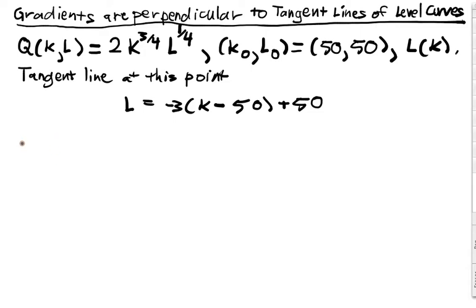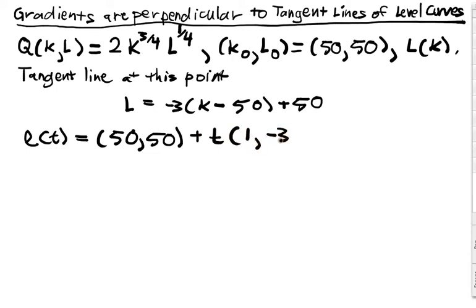And of course this is a parametric equation, right? So also we could say that the tangent line is l of t equals the point on the curve plus t times 1, negative 3. This was the tangent vector that we saw last time.